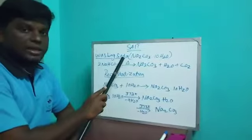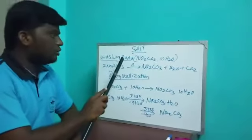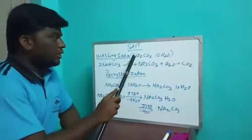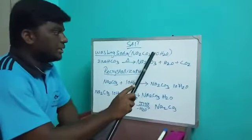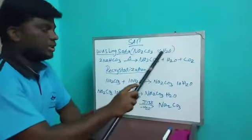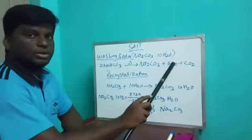First, we already know about washing soda. What is the formula of washing soda? Sodium carbonate plus 10H2O. Sodium carbonate into 10H2O is the formula of washing soda.